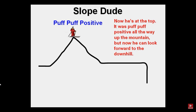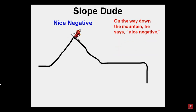Now he's at the top — it was puff, puff, positive all the way up the mountain. But now he can look forward to the downhill. On the way down the mountain, he says 'nice, negative.'